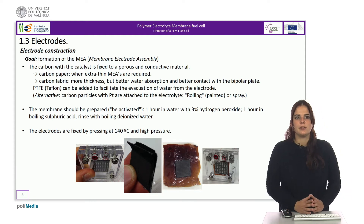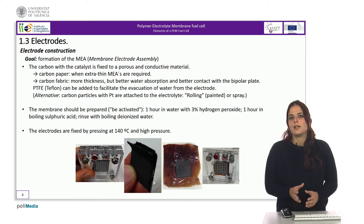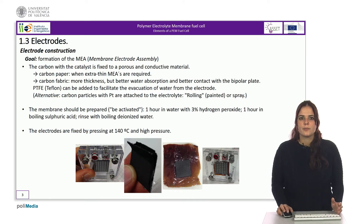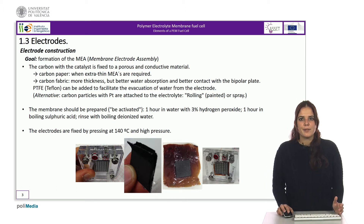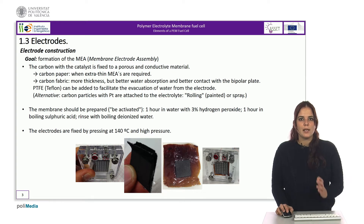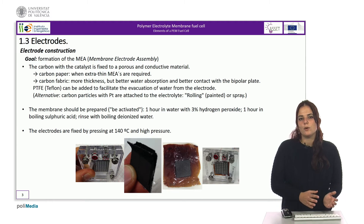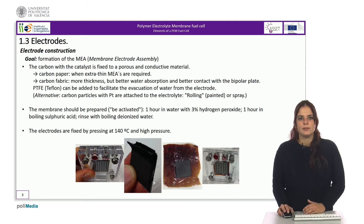This connects this cell in contact with the next one. Besides that, the carbon particles with the catalyst are arranged on the surface of the electrode that will be in contact with the membrane, either by painting it or by spraying it.